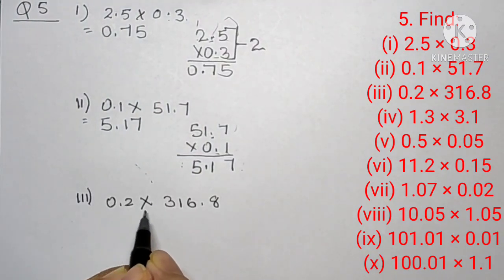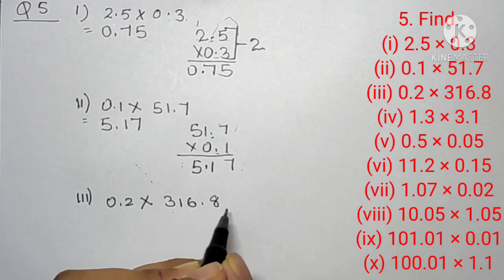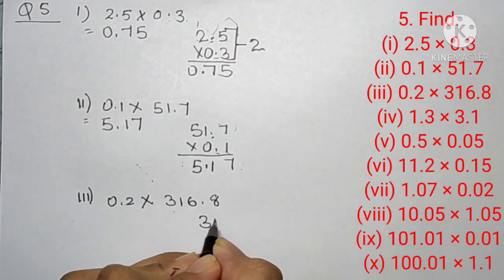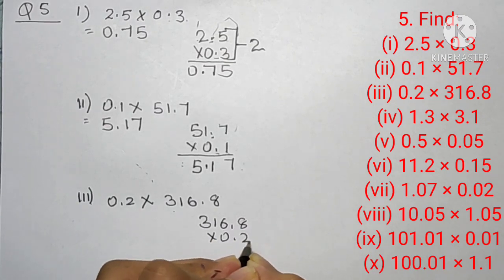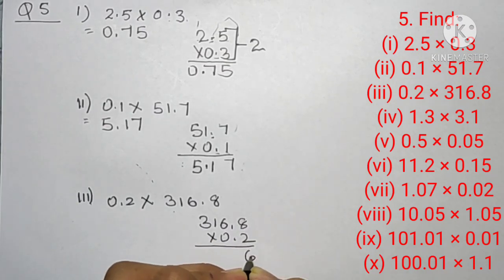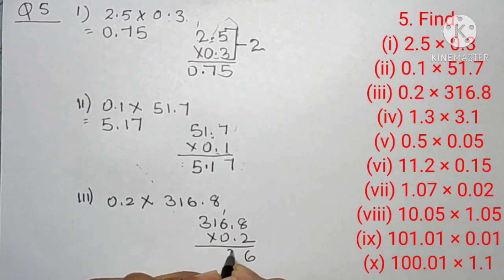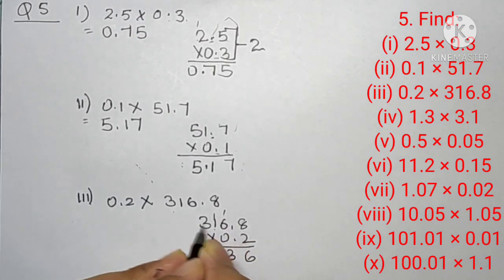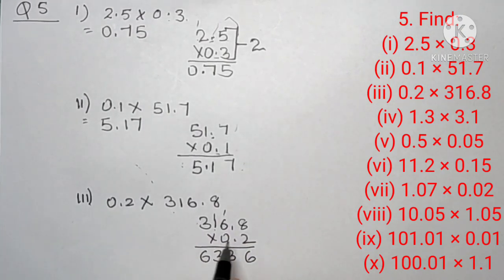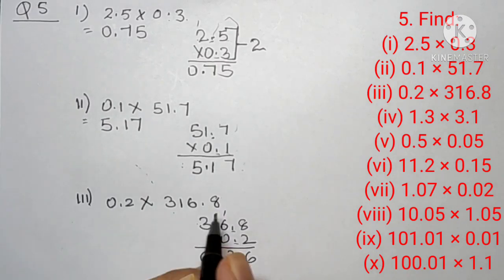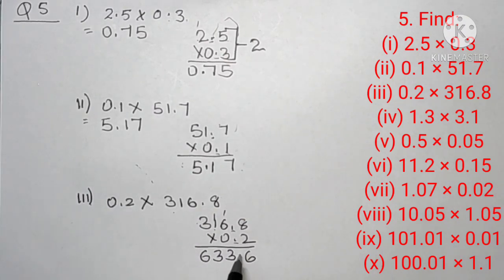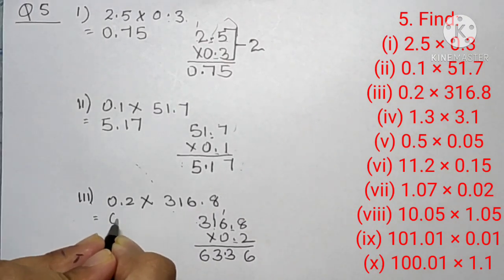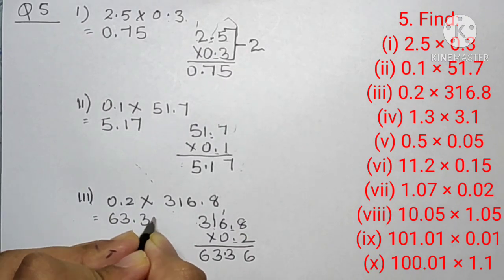Question number five, third part is 0.2 into 316.8. Let's multiply: 8 twos are 16, 6 twos are 12 carry 1, then 13, 2, 1, 2, 1, 3, and 3 twos are 6. Two decimal points are there, both one digit from the last, so 1 plus 1 equals 2 digits from the last. Our answer is 63.36.